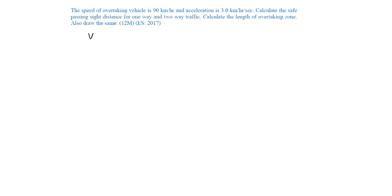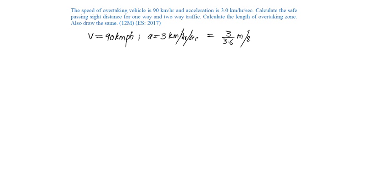The speed of the overtaking vehicle equals the design speed, which is 90 kmph. The acceleration is 3 km per hour per second, which equals 3 divided by 3.6 in meter per second squared, giving 0.833 meter per second squared.